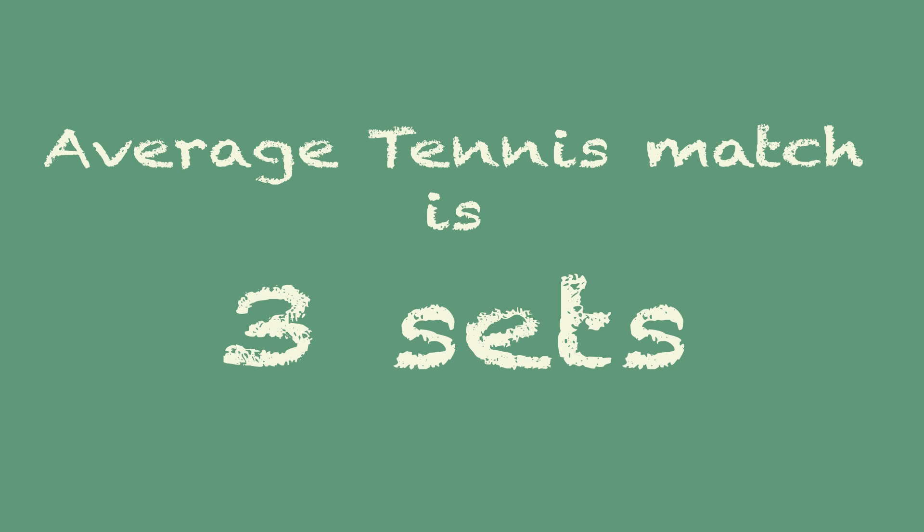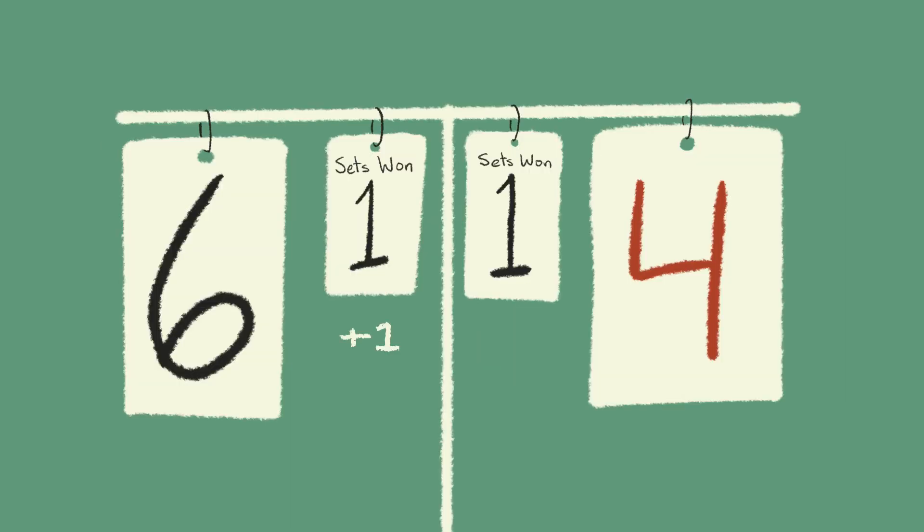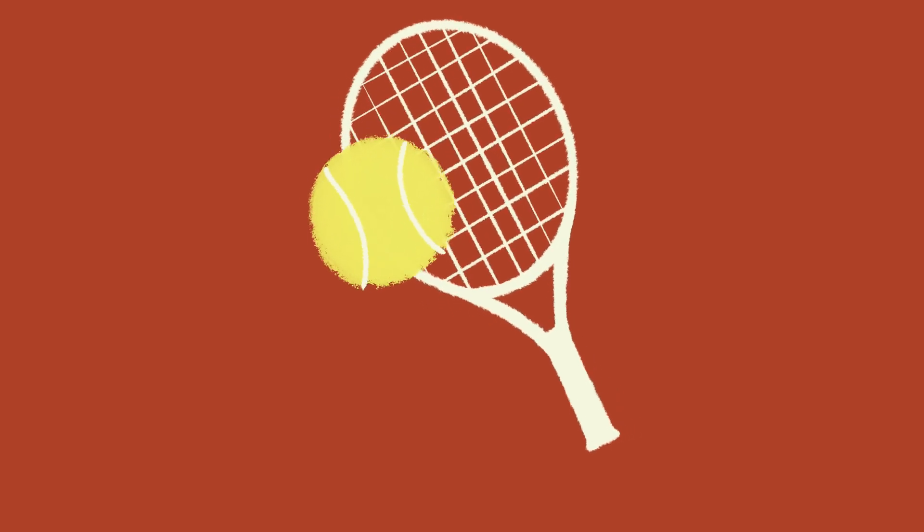A typical tennis match consists of 3 sets. The winner of 2 out of 3 wins the match. And now you know how tennis works.